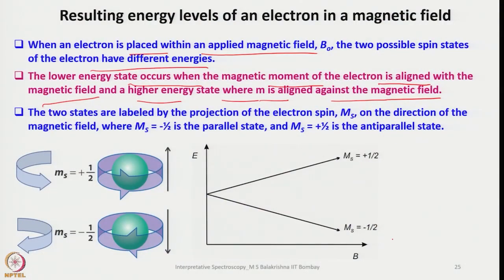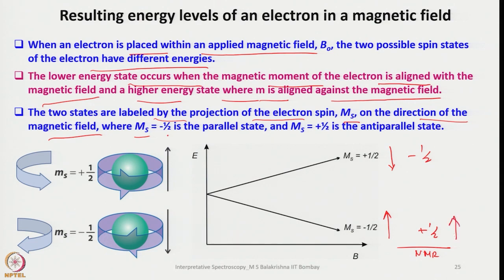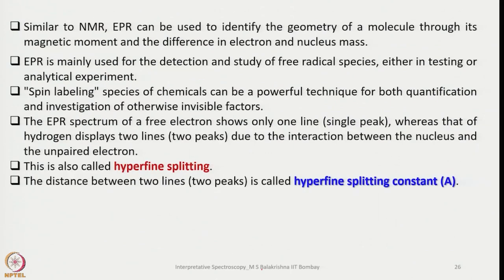When the spin is aligned against the magnetic field we have Ms equals plus half. In NMR the state aligned with the magnetic field has the lowest energy, which is plus half, whereas here it is the opposite. The two states are labelled by the projection of the electron spin Ms: Ms equals minus half is the parallel state and Ms equals plus half is the anti-parallel state. It is always convenient to compare NMR and EPR in this way.